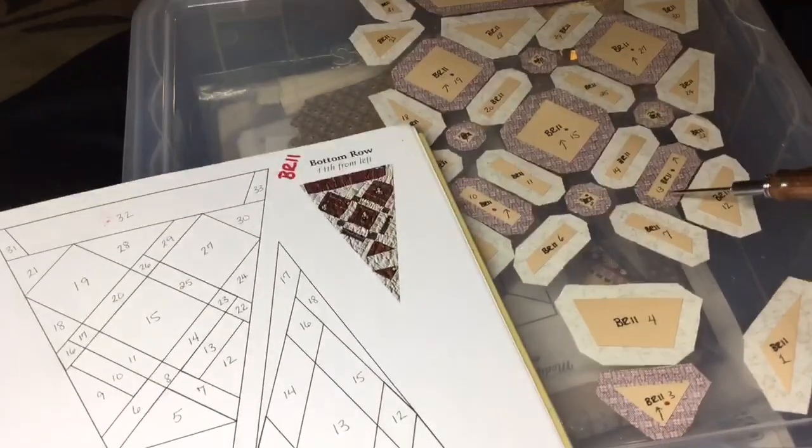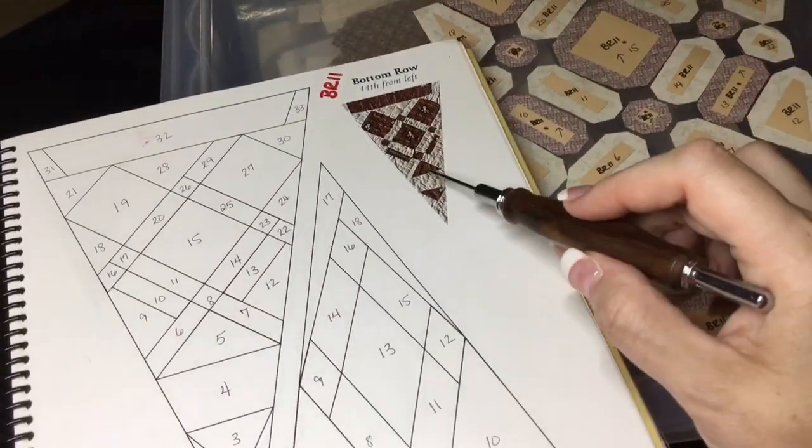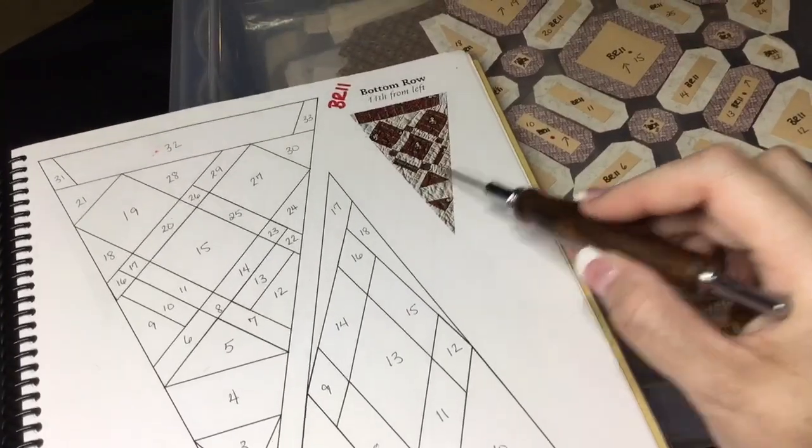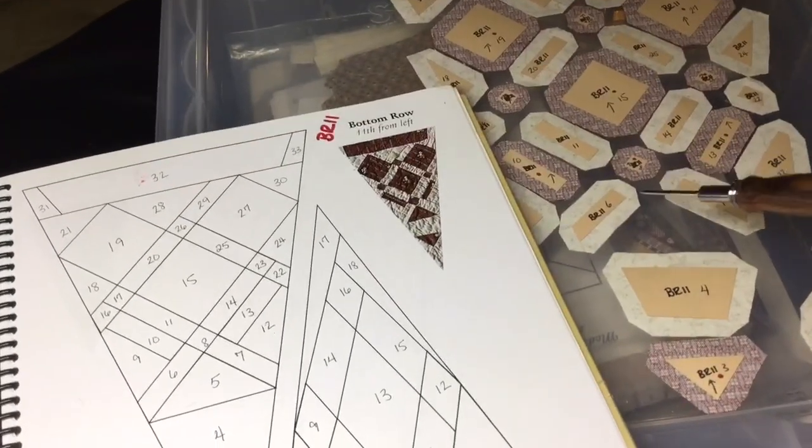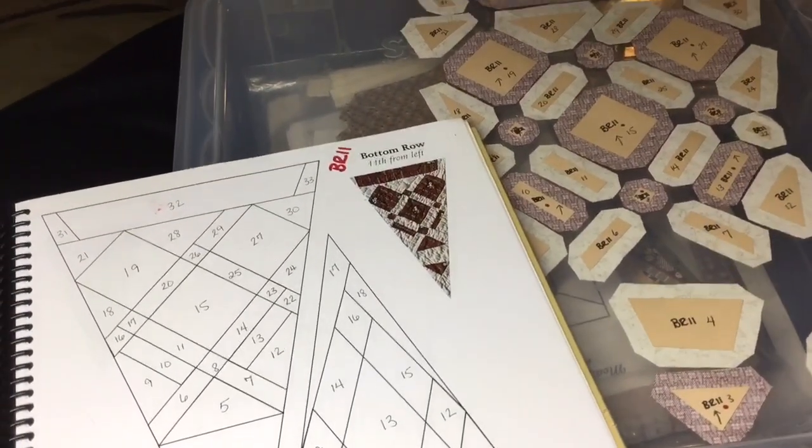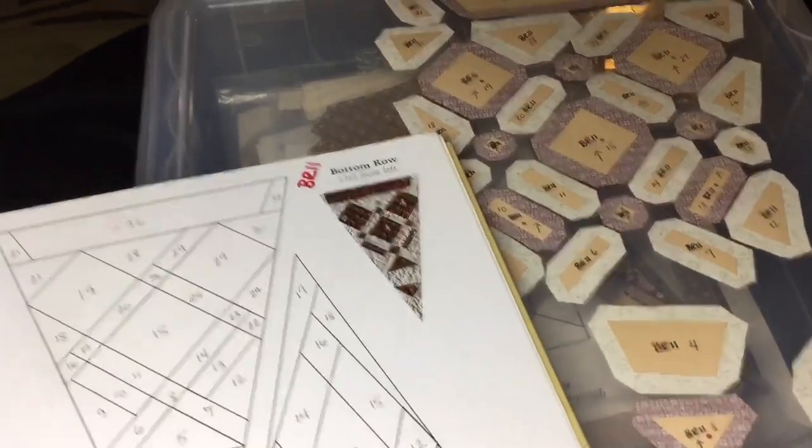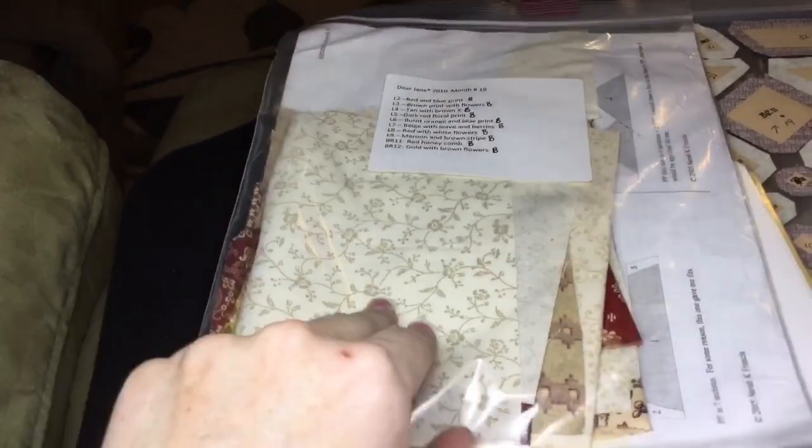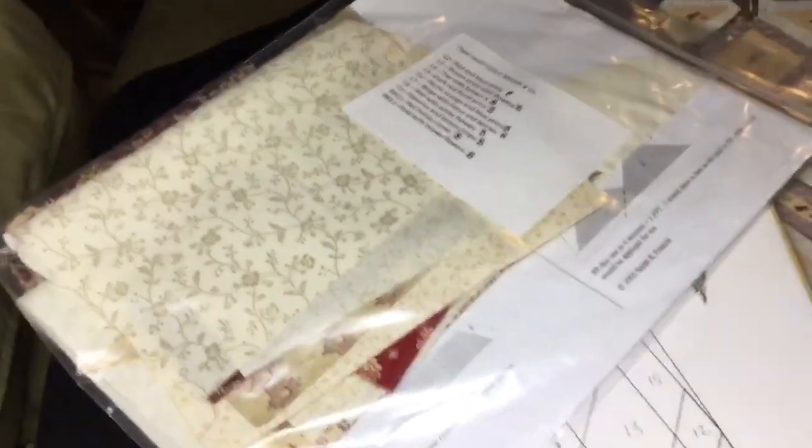The most important part though is that I need the actual fabric. Number five is this piece right here, so I need my focus fabric. This is the reason why I keep all of my fabric. I got this as a block of the month originally, so I do all my block prep and put all my bits back in the same bag. I'm going to dig through here and get out my actual fabric.